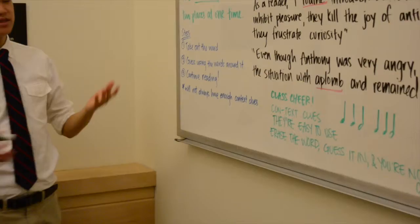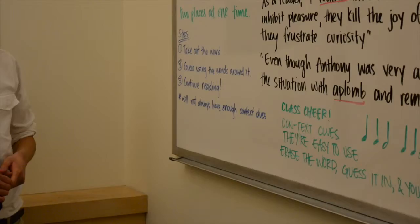How do you use context clues? Number one, you take out the word. In our class example here, I'm taking out the word. Two, guess using the words around it. And then you can use the clues that might be in the sentence to guess what's in there. And then three, continue reading, because there's a lot of reading in that book.